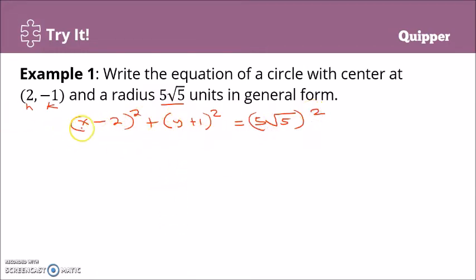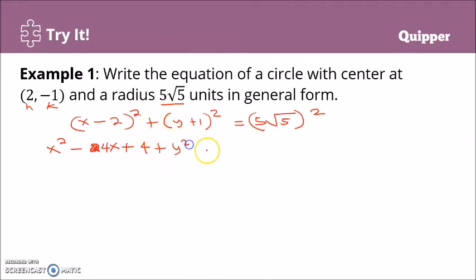Expanding the binomials: (x − 2)² gives x² − 4x + 4. And (y + 1)² gives y² + 2y + 1. For the right side, (√5)² equals 5. So we have x² − 4x + 4 + y² + 2y + 1 = 5.